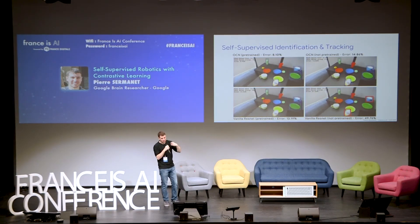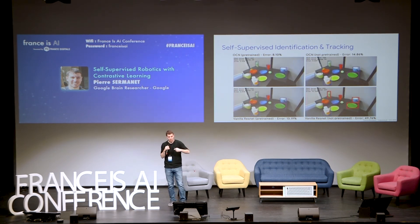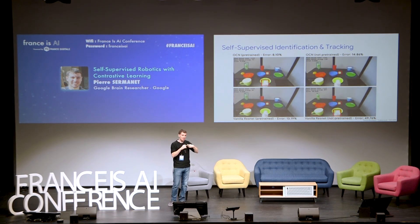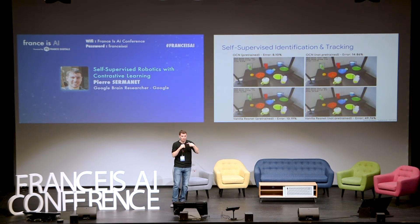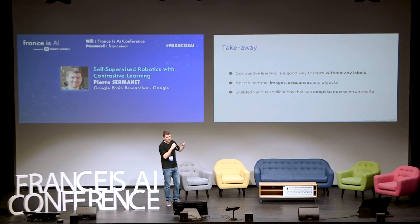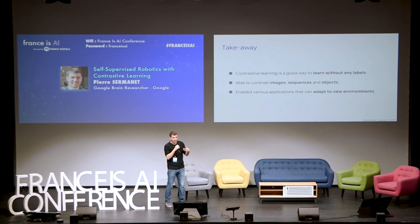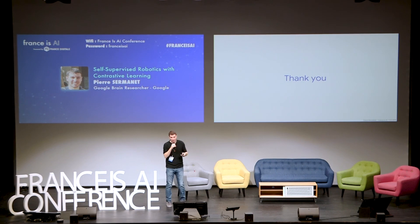We also have continuous embeddings — so if you ask a robot to bring you the green plate and it brings something you're not okay with, you can say 'I want the one that's more green' or 'the one that's more round,' and it will understand what that means. To recap, the takeaways are that contrastive learning is a good way to learn without any labels, and we were able to contrast images, sequences, and objects. That enables various applications that can robustly adapt to new environments. Thank you.